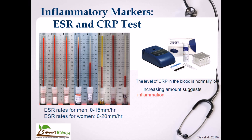A higher sedimentation rate tells us there is an inflammatory problem going on in our body. On the other hand, CRP is the C-reactive protein. This protein is present in our plasma, and the CRP test measures the concentration of C-reactive protein in blood serum. It is a special protein produced by the liver only during acute inflammation or infection. The presence of CRP in our blood is a serious indication of infection or inflammation. Together, the presence of CRP and elevated ESR confirm whether inflammatory response is occurring in the body.